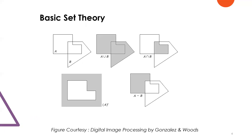Since morphology is based on set theory, this picture gives us a basic description of how two regions given by A and B interact. Starting with A union B as shown in the second picture, A intersection B shows how the common part is highlighted, A complement where the entire sample space other than A has been highlighted, and A minus B where the component other than B occupied has been highlighted — explaining the basic set theory which is a primary prerequisite for discussing morphological image processing.